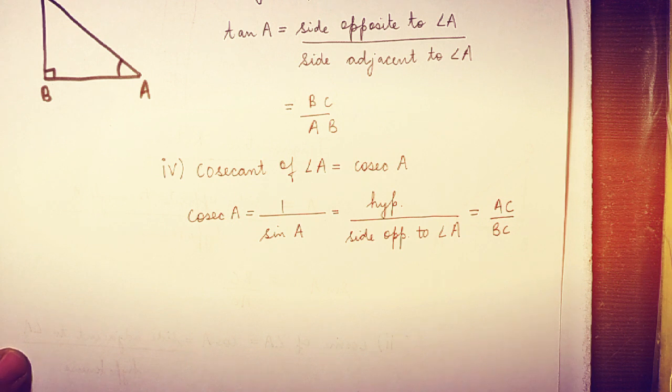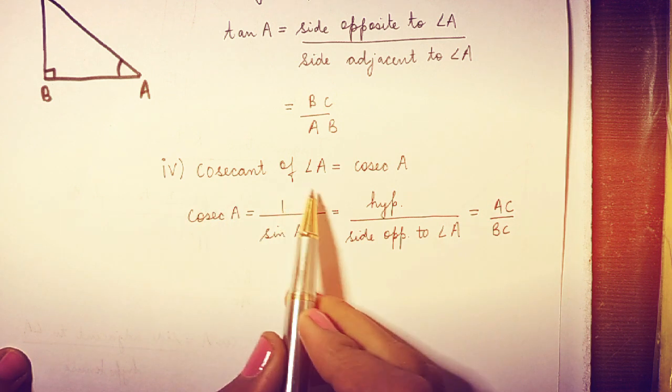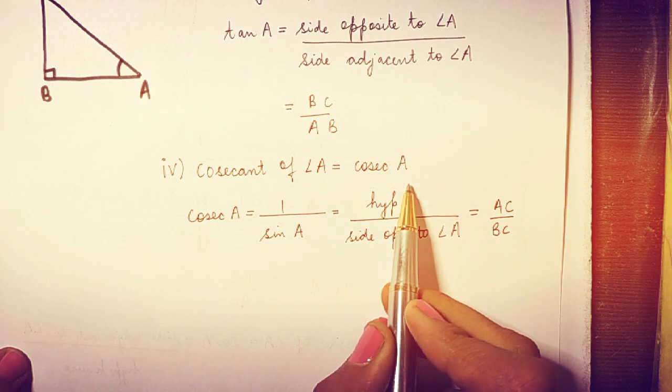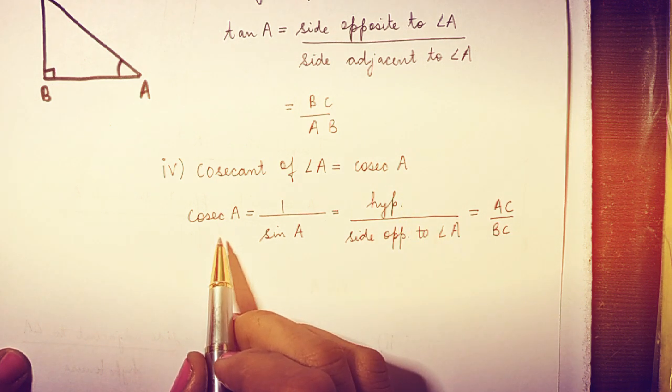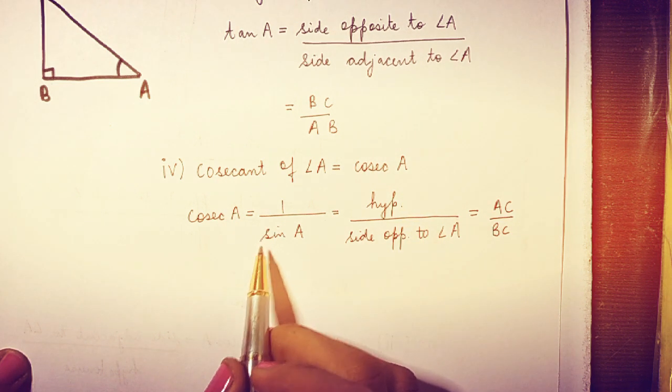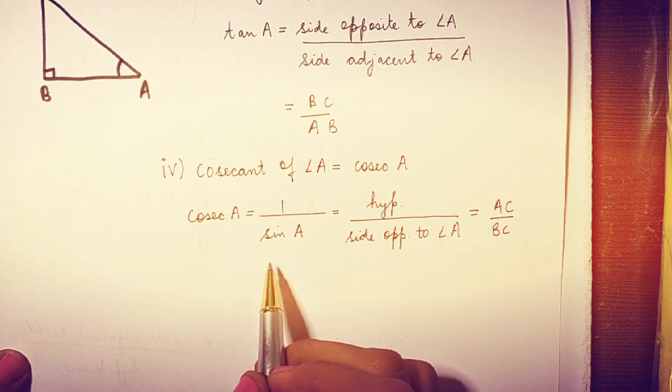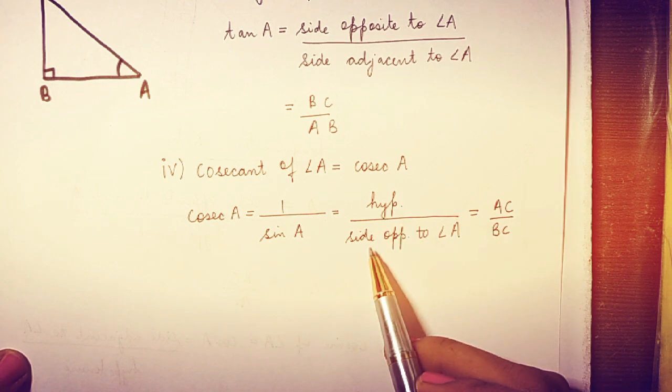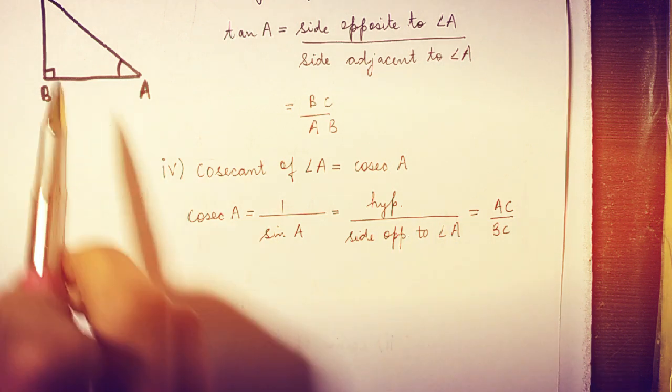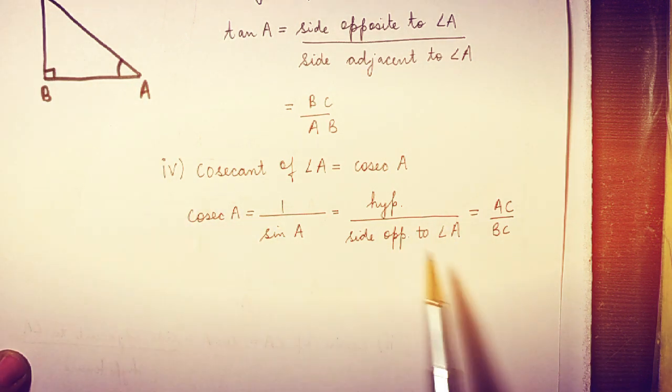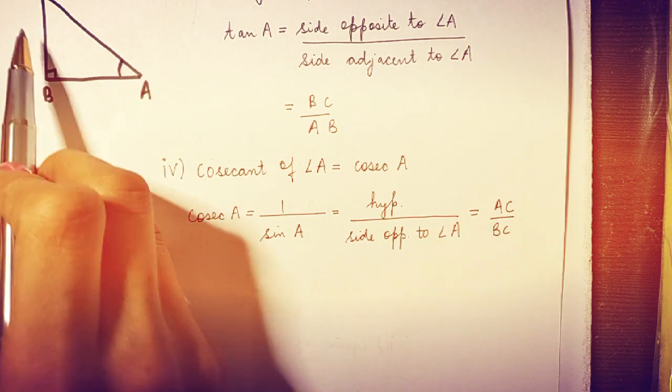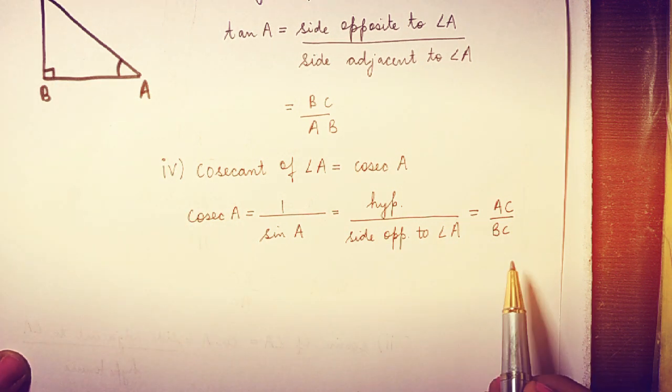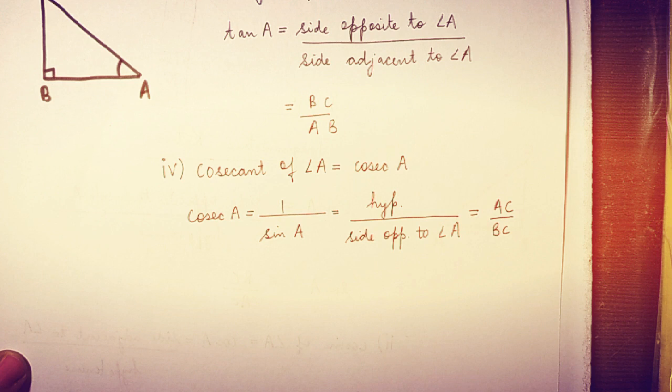The next trigonometric ratio is the cosecant of angle A, or we can say cosec A. So what is cosec A? It is the reciprocal of sine A, not inverse but reciprocal of sine of angle A. That is hypotenuse divided by side opposite to angle A. So here we have hypotenuse AC and side opposite to angle A is BC. So AC upon BC is the ratio, which is cosec A for this triangle.